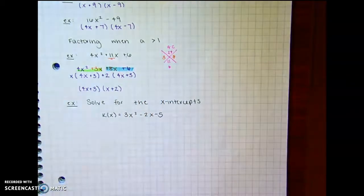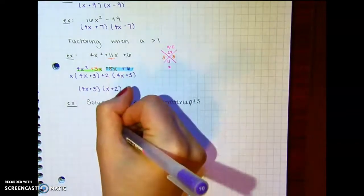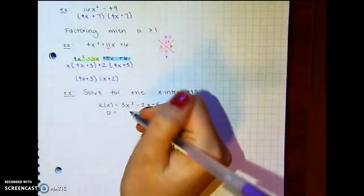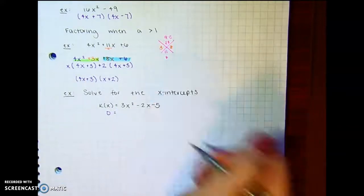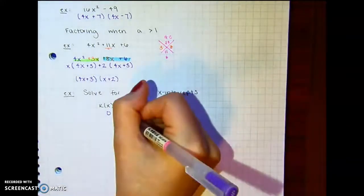k of x equals 3x squared minus 2x minus 5. So when you're solving, you set y equal to 0. And then we're going to continue to factor this using grouping.